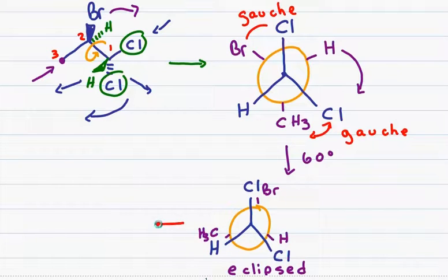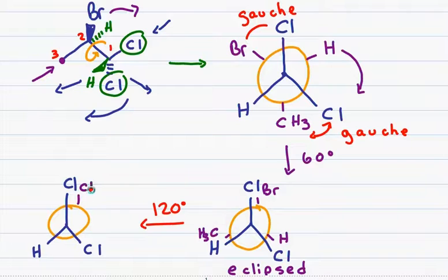However, if I rotate this molecule 120 degrees, this means I'm jumping from the eclipsed 60 degrees to staggered and then another 60 degrees to the other eclipsed conformation. I will now have a methyl group eclipsing a chlorine, bromine eclipsing my methyl group and hydrogen eclipsing my hydrogen.